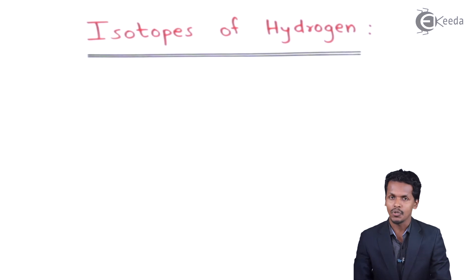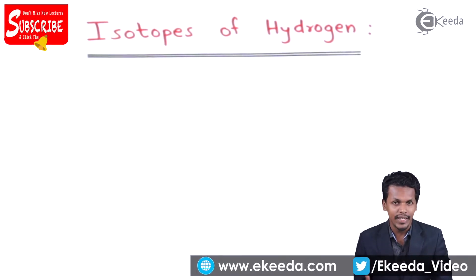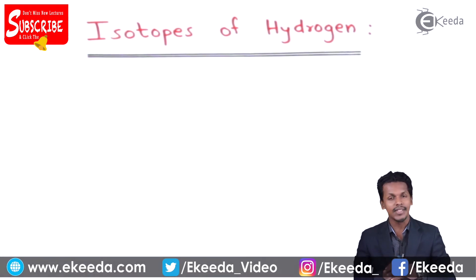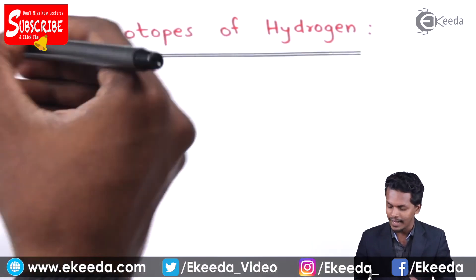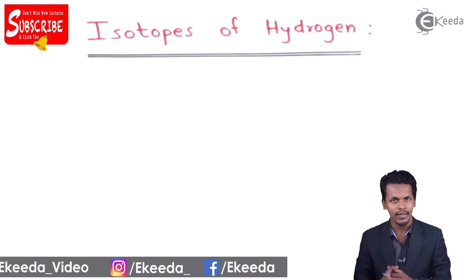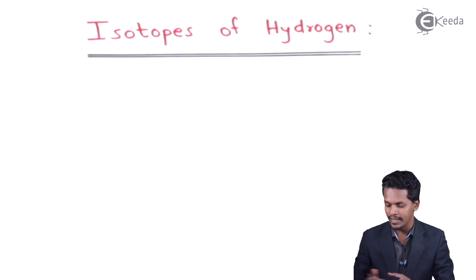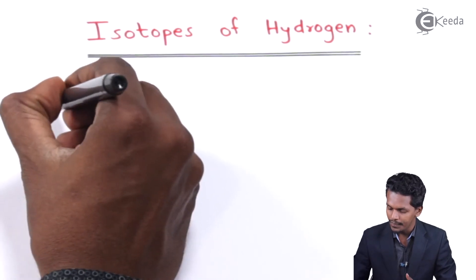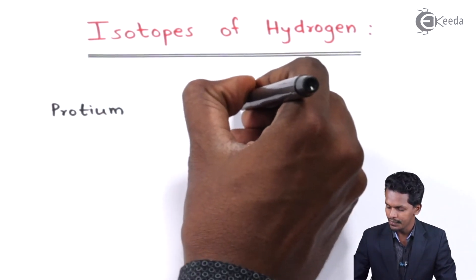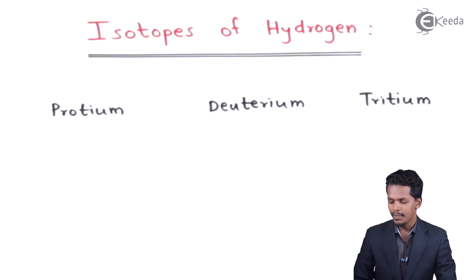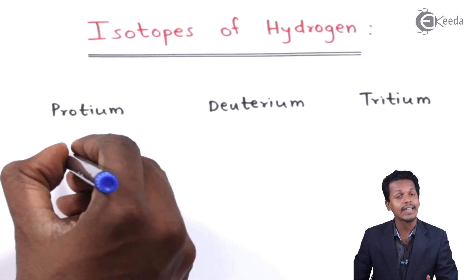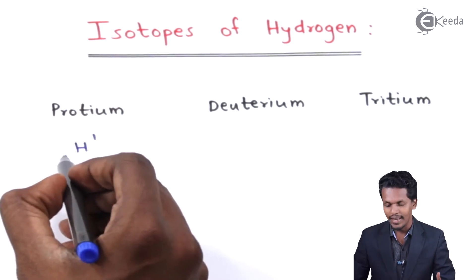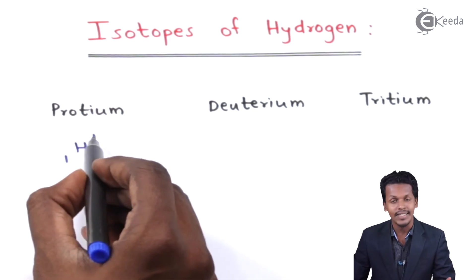Hydrogen has three isotopes: protium, deuterium, and tritium. The first one, protium, is simply known as hydrogen and is represented as ¹₁H — where the bottom number represents the atomic number and the top number represents the atomic mass number.